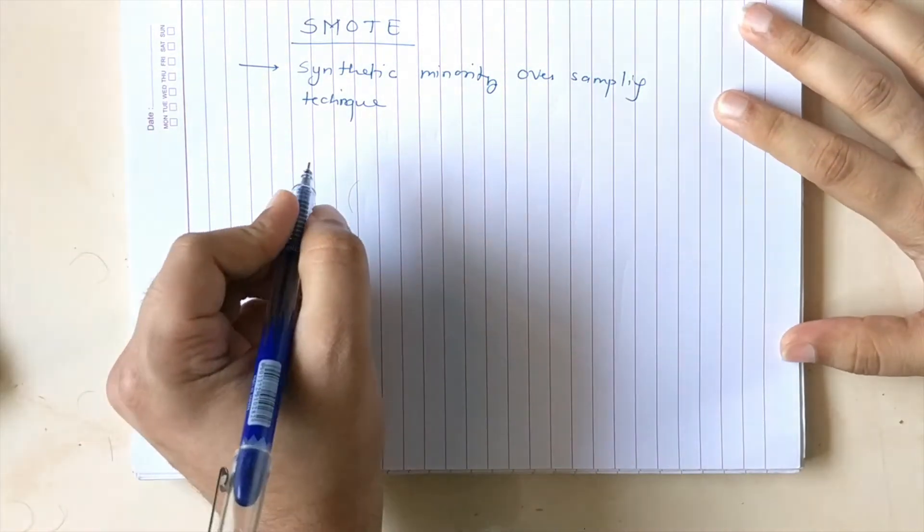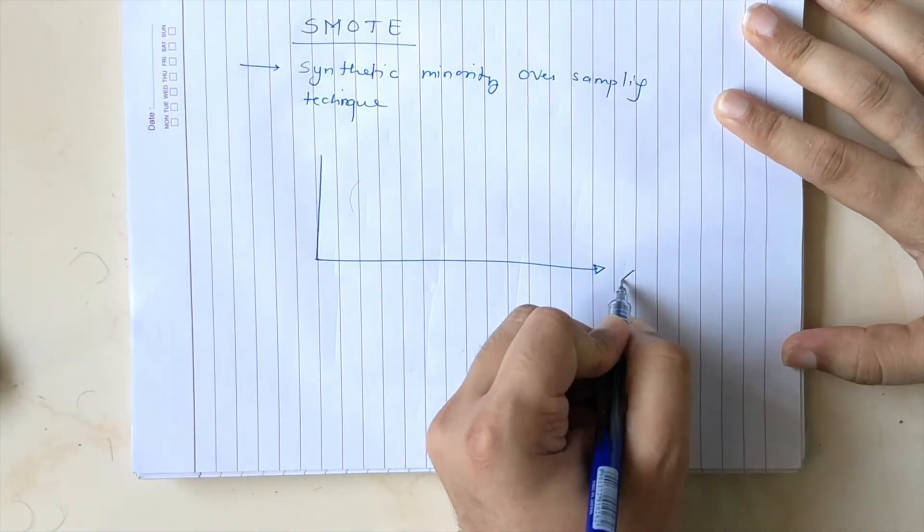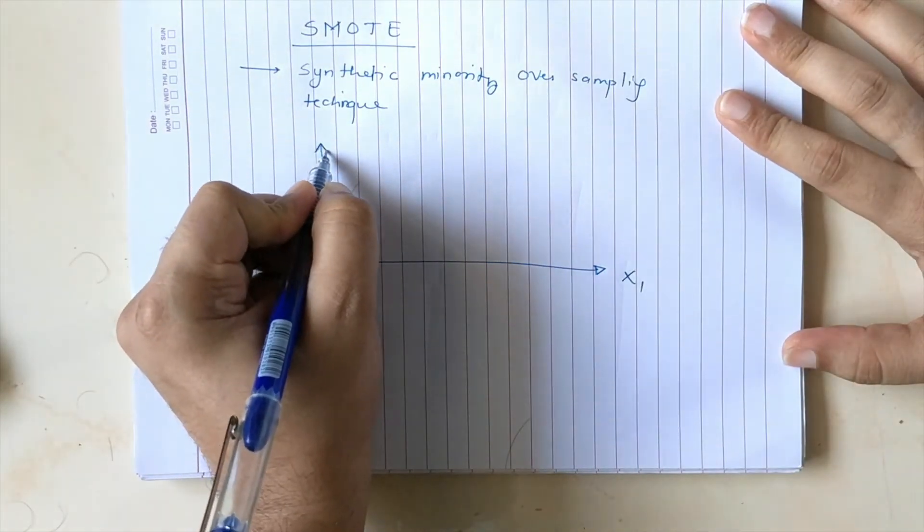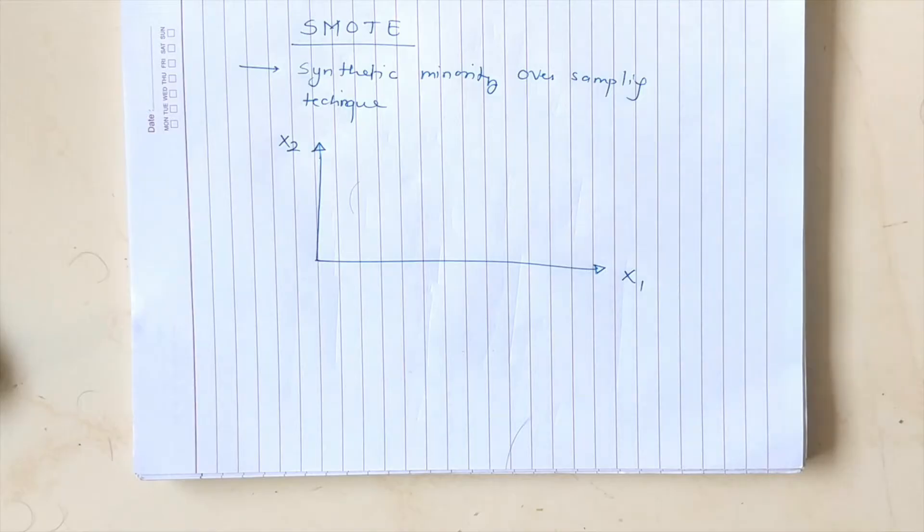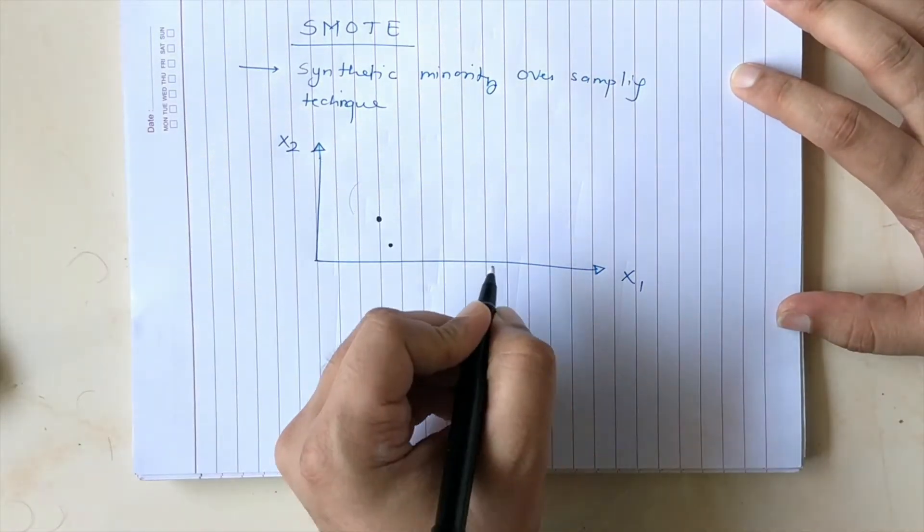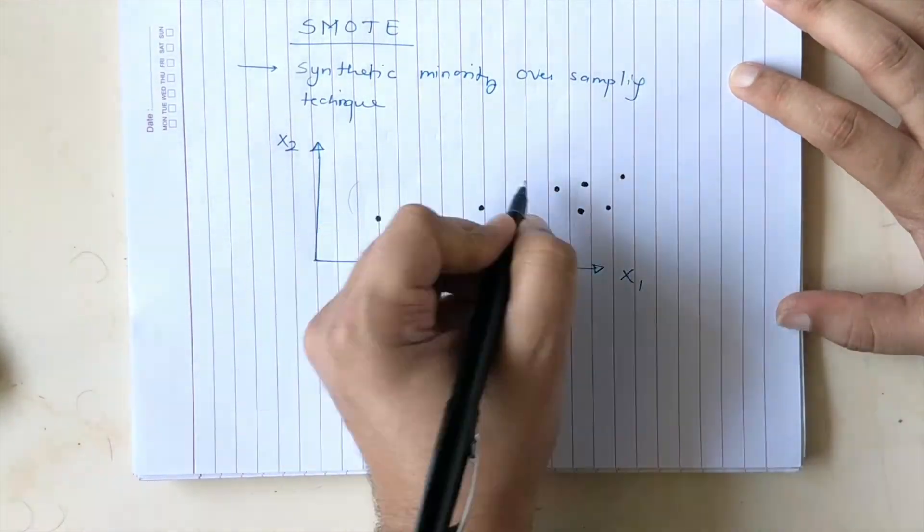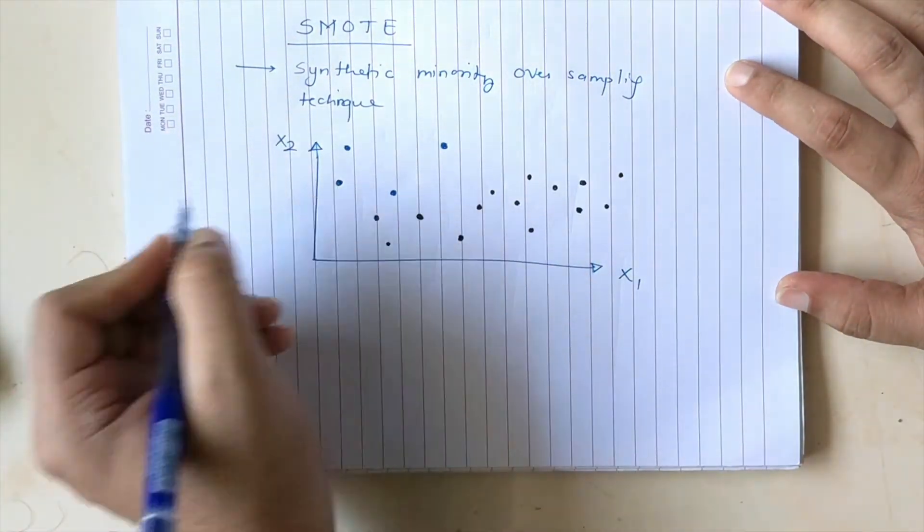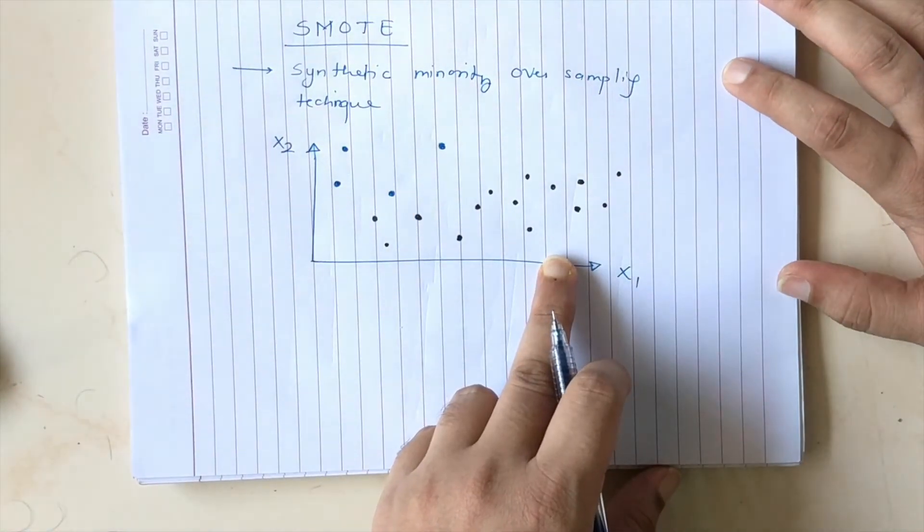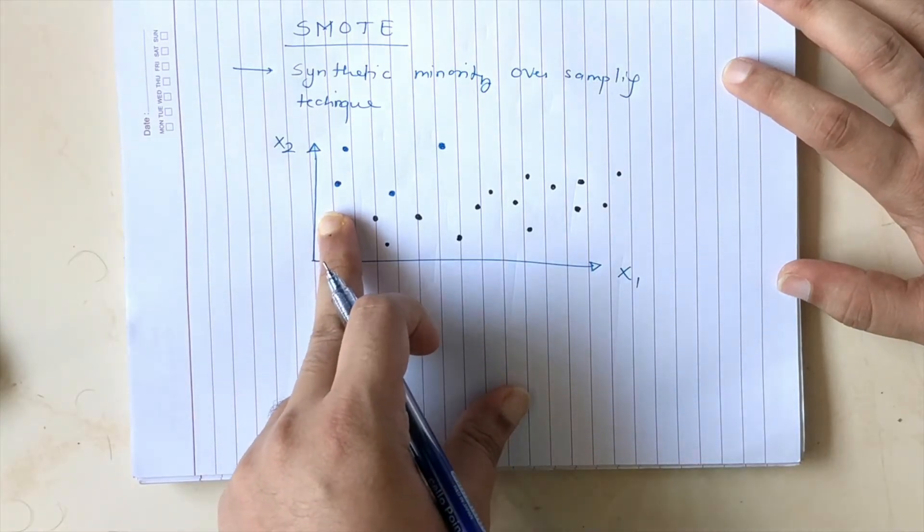Say for example, you have two features X1 and X2. We have more number of black samples as compared to blue samples. So there is class imbalance that is there.